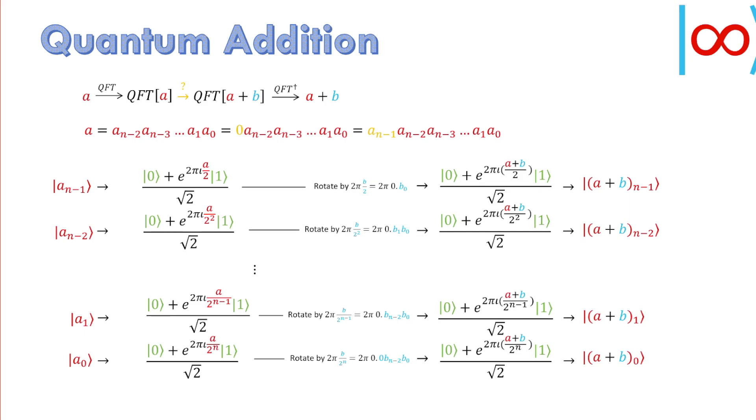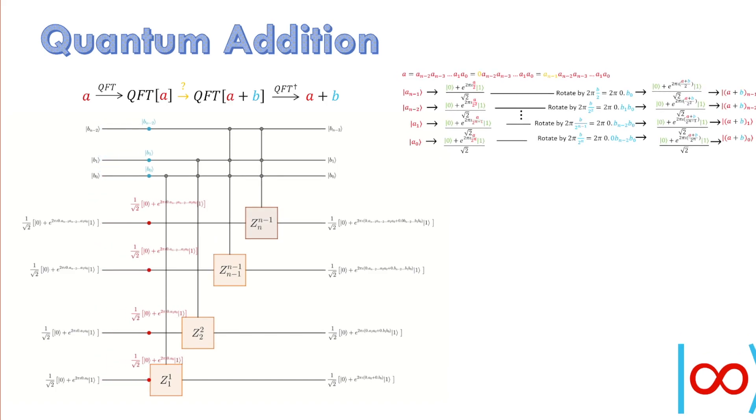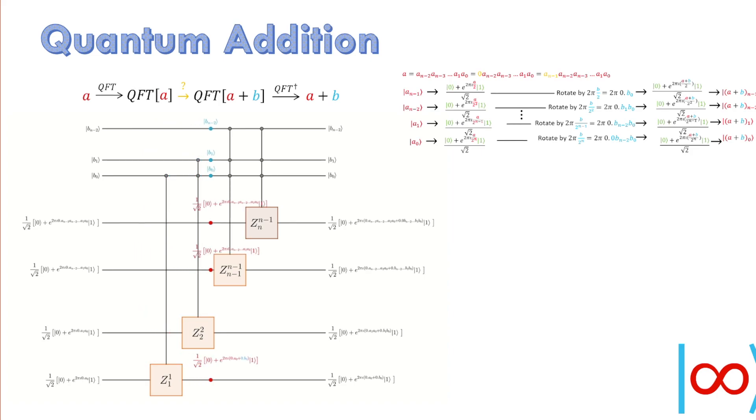The following circuit outputs the Fourier transform of the sum. Notice that the last qubit of b is used twice with different rotations. The first rotation is usual. The second rotation is to shift the bits of b by one more position to account for the additional 0 we appended in the binary expansion of a. This modification reduces the required number of qubits by one.